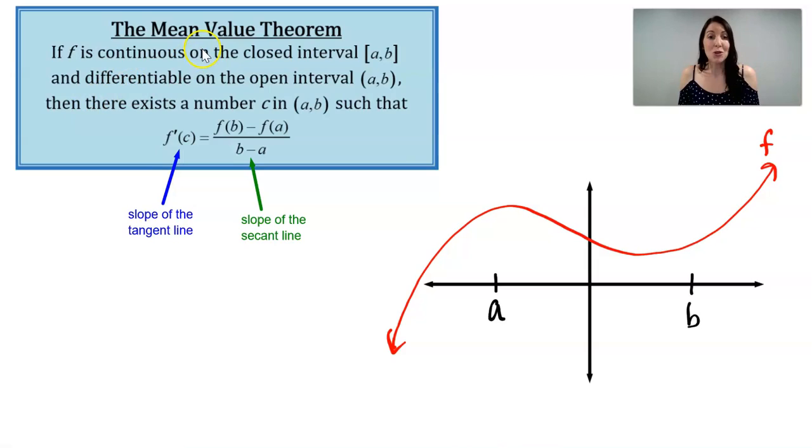That means as long as those conditions are met, there exists a number c somewhere between a and b such that f'(c), which is the slope of the tangent line at c, is equal to the slope of the secant line between a and b.